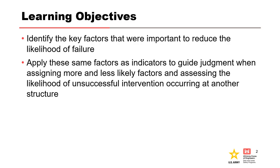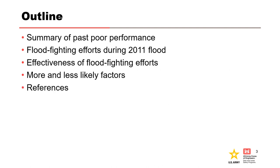During the presentation, we will identify the key factors that were important in reducing the likelihood of failure of the levee, and apply those same factors as indicators to guide judgment when assigning more and less likely factors and assessing the likelihood of unsuccessful intervention occurring at another structure. The first portion will summarize past performance issues observed at Buck Chute, followed by a summary of the BEP factors discussed during the previous case history presentation.